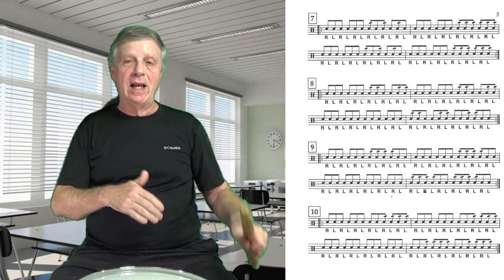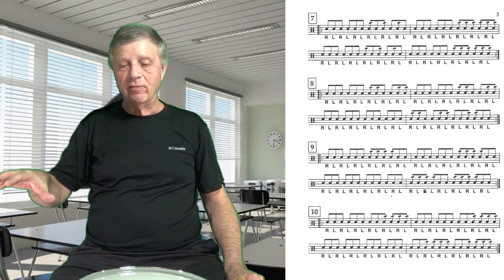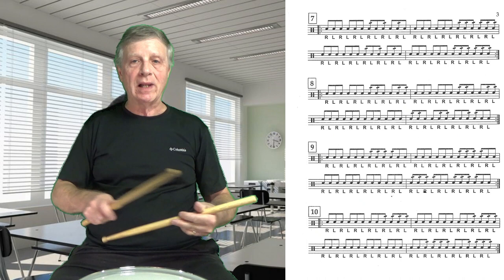When you get to the second line, we're doing a four and a four. The triplets set up the three sixes on the end. So we've got three sixes, three six-stroke rolls on the last measure.